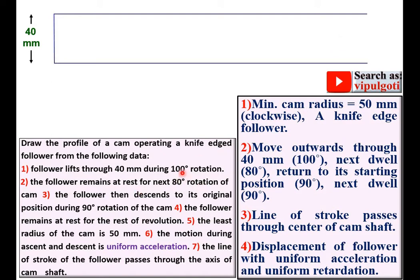Now first you have to take the scale. So here 1 cm is equal to 10 degrees. So that your length of the outstroke is equal to 10 cm.